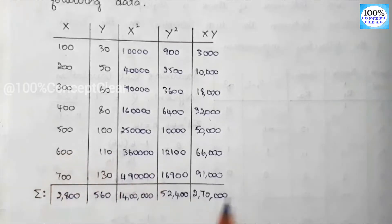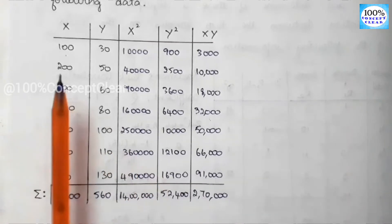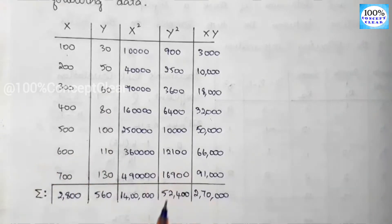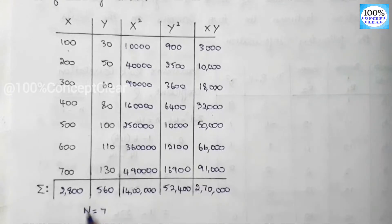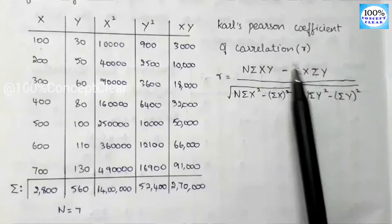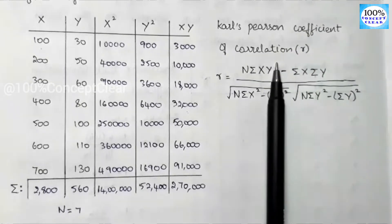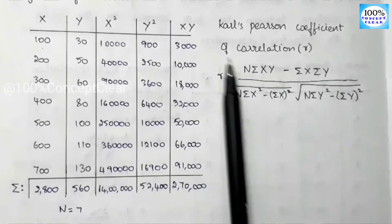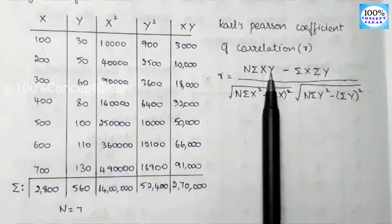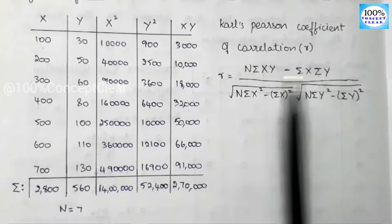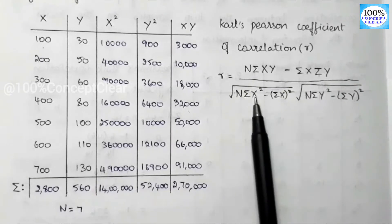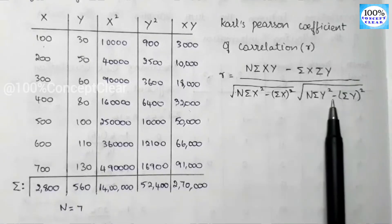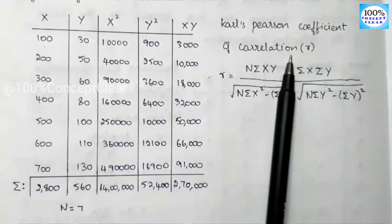We have 7 data points, so n is equal to 7. Now let's look at the formula — the Coefficient of Correlation. It is small r. r is equal to: n into summation of xy minus summation of x into summation of y, divided by the root of [n into summation of x² minus summation of x whole square] into [n into summation of y² minus summation of y whole square]. This is Karl Pearson's Coefficient of Correlation formula.